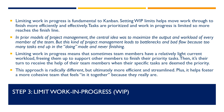The next step is to limit work in progress. Limiting work in progress is fundamental to Kanban. Setting WIP limits helps move work through to finish more efficiently and effectively. Tasks are prioritized and work in progress is limited so more reaches the finish line. In prior models of project management, the central idea was to maximize the output and workload of every member of the team. But this leads to bottlenecks and bad flow, because too many tasks end up in the doing mode and never finishing.